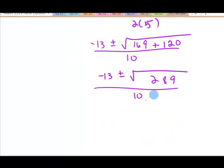289 is a perfect square. So we have negative 13 plus or minus square root of that is 17 over 10.